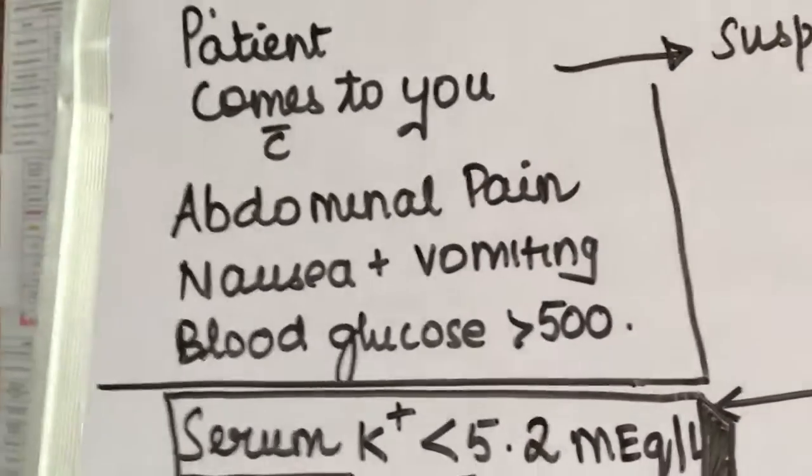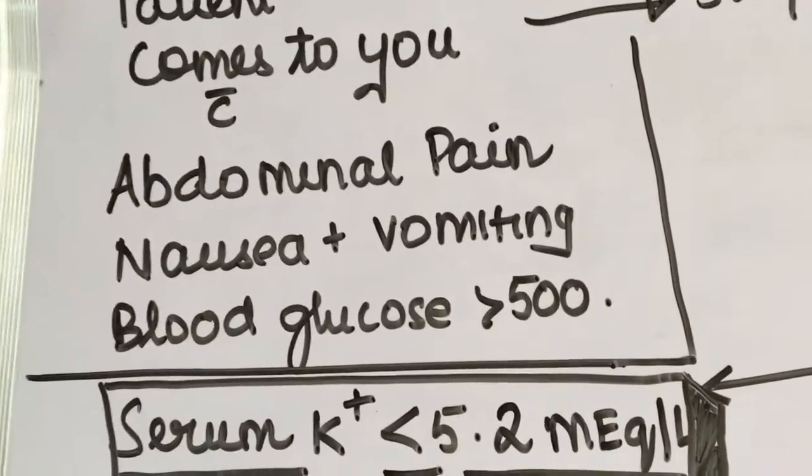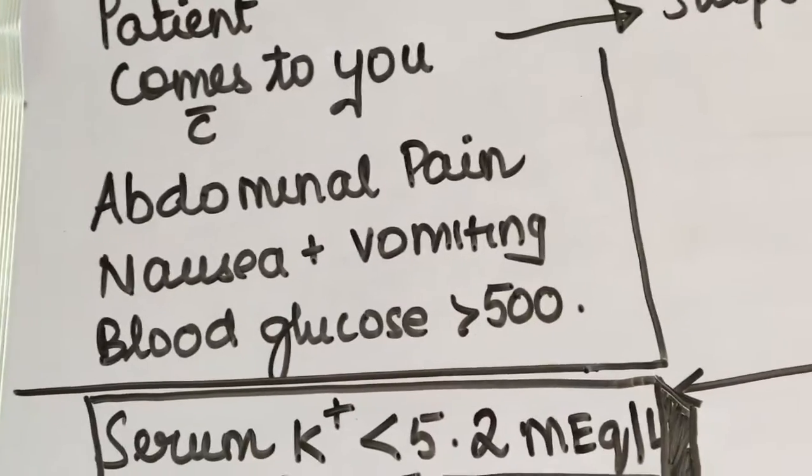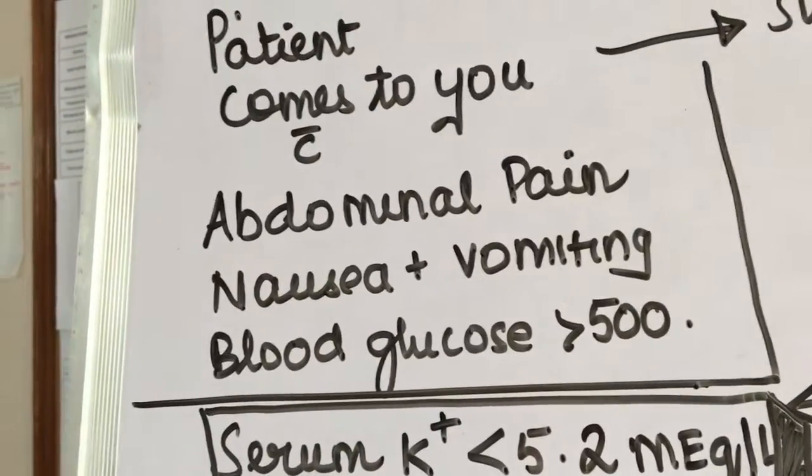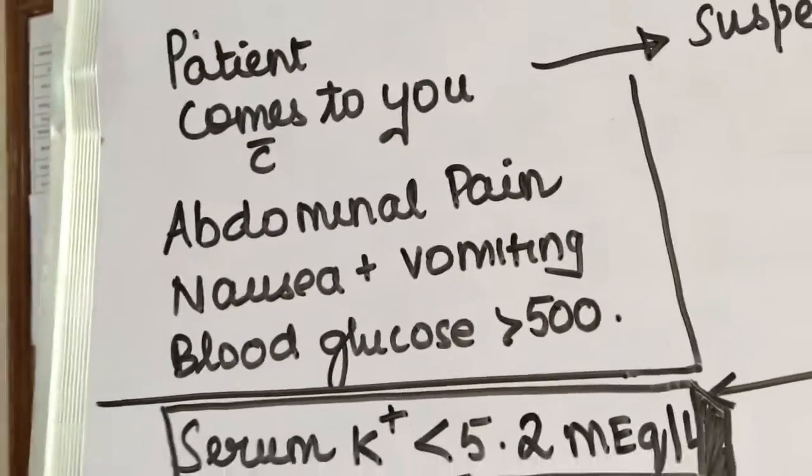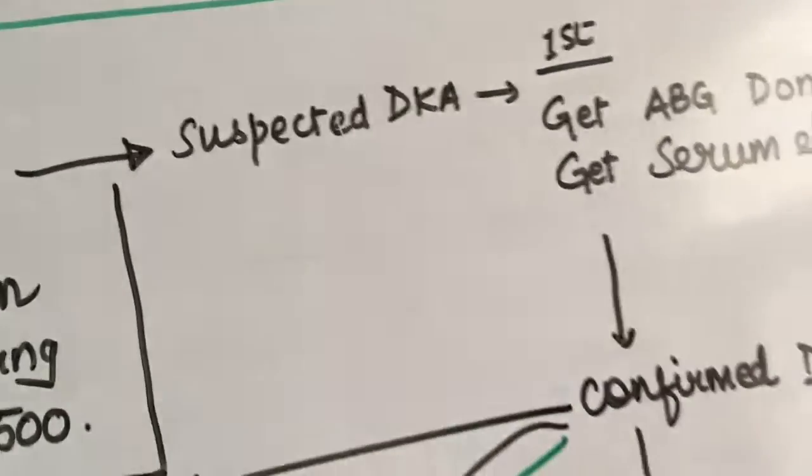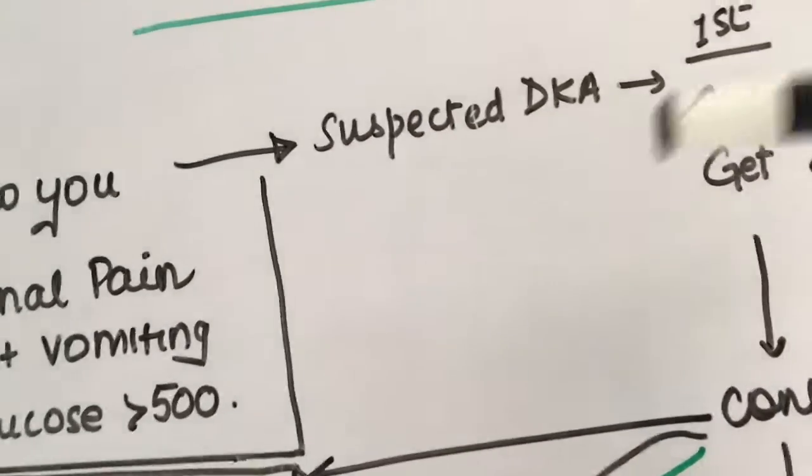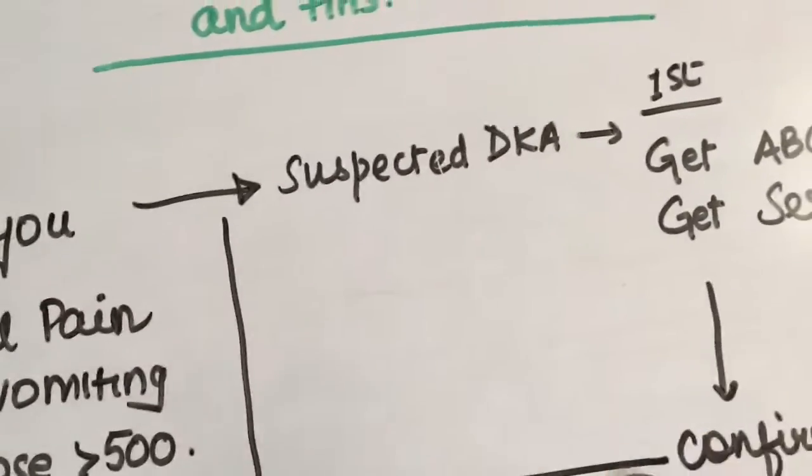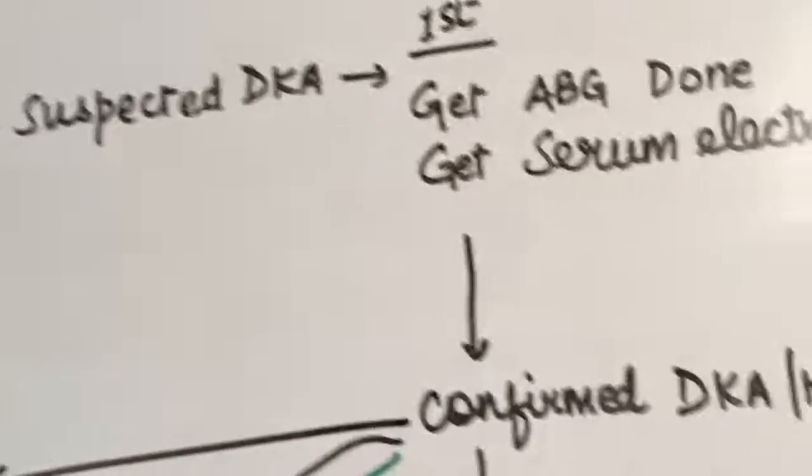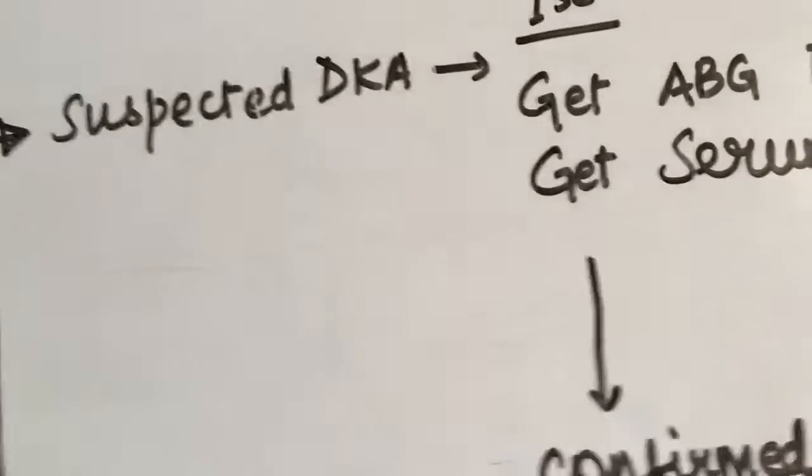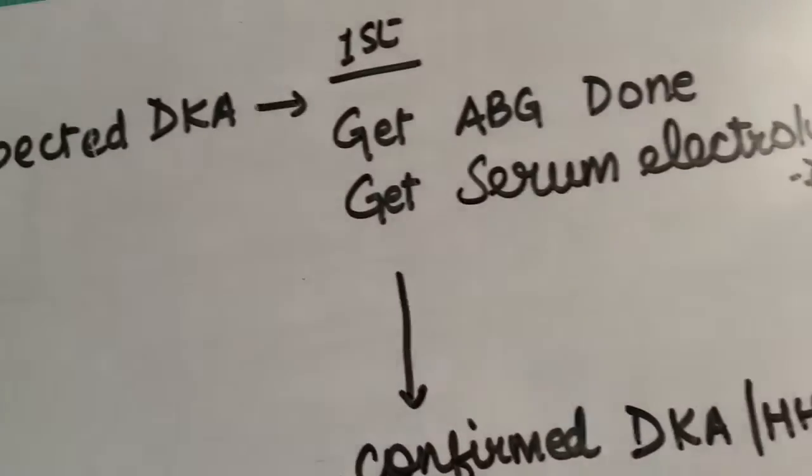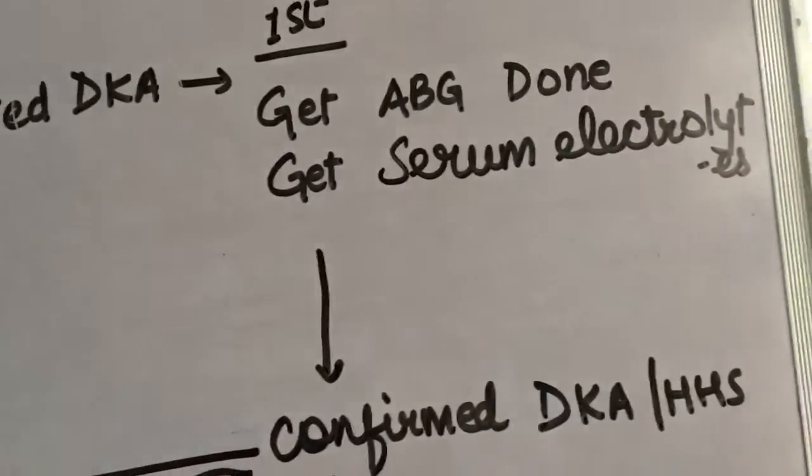As soon as the patient comes to you with abdominal pain, nausea or vomiting, and blood glucose levels more than 500 or highly elevated levels of blood glucose, you should have a high index of suspicion for DKA or HHS. Such patients with type 1 diabetes mellitus will have DKA, whereas in the case of type 2 diabetes mellitus it is going to be HHS. The first and foremost step you would go for is to order the ABG.